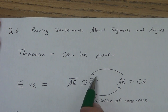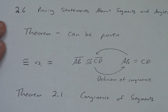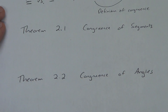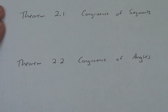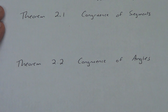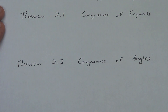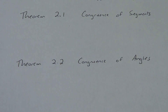We don't call one 'definition of equals' and the other 'definition of congruence.' Alright, here we go — two theorems. Theorem 2.1, congruence of segments. Do not memorize theorems by number. If you put theorem 2.1 for your reason, I don't know what it is. I don't memorize them by number and I don't want you to memorize them by number.